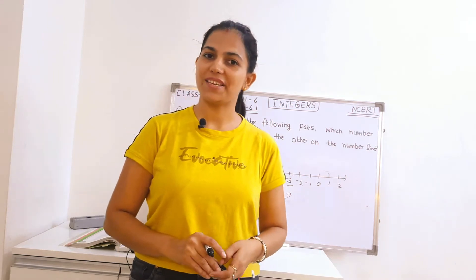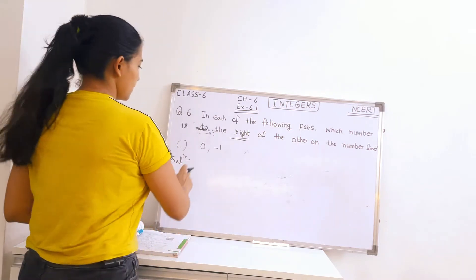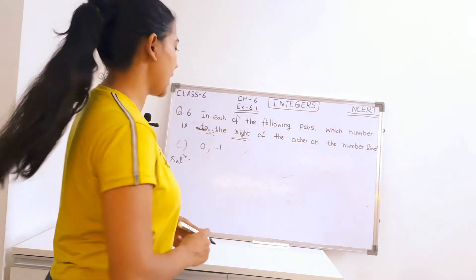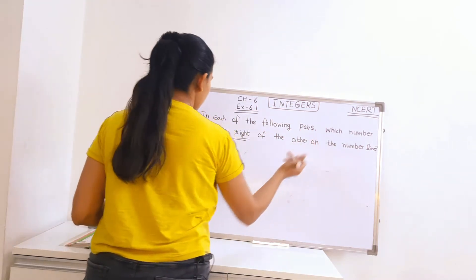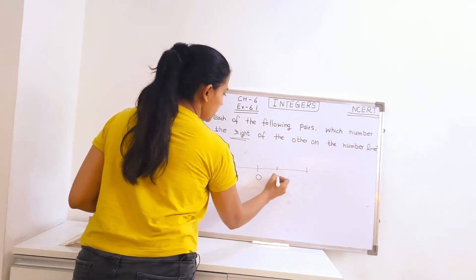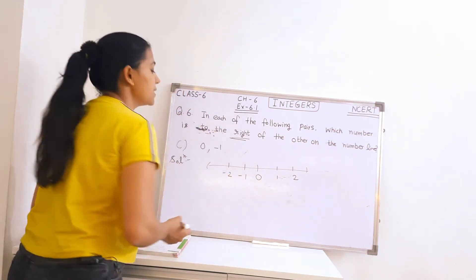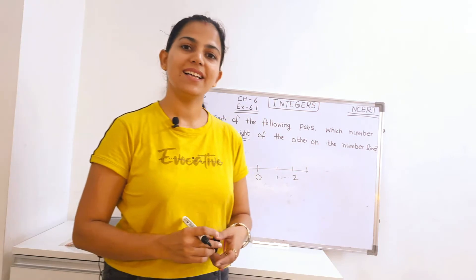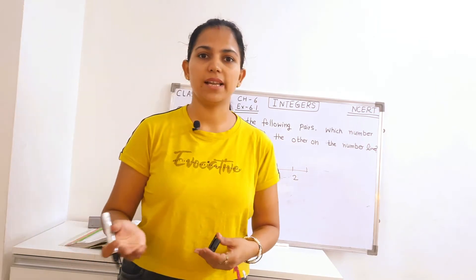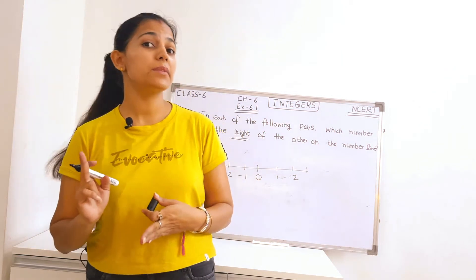So part B is done. Let's move to part C. Part C gives us 0 and minus 1. We need to check which number is to the right side of the number line. First of all, let's draw a number line — 0 in the center, positive numbers on the right side, and negative numbers on the left side. We always start from 0 on the number line — right of 0 and left of 0. Numbers to the left of 0 are the negative numbers.